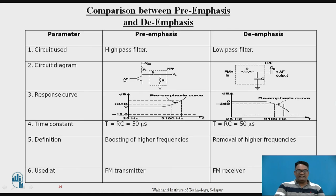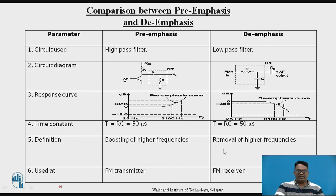The comparison between pre-emphasis and de-emphasis circuit: the pre-emphasis circuit uses a high pass filter whereas de-emphasis uses a low pass filter. The time constant for pre-emphasis is T = RC = 50 microseconds, and for de-emphasis it is also the same. Pre-emphasis is used for boosting of high frequency signals, while de-emphasis is used for removal of high frequency signals. Pre-emphasis is used at the FM transmitter and the de-emphasis circuit is used at the FM receiver.